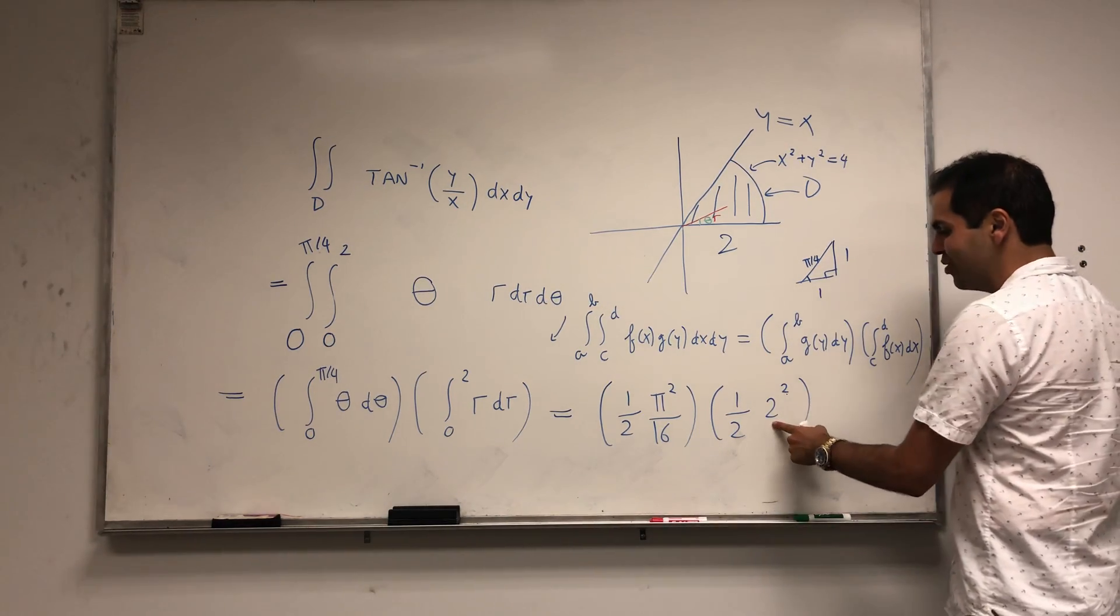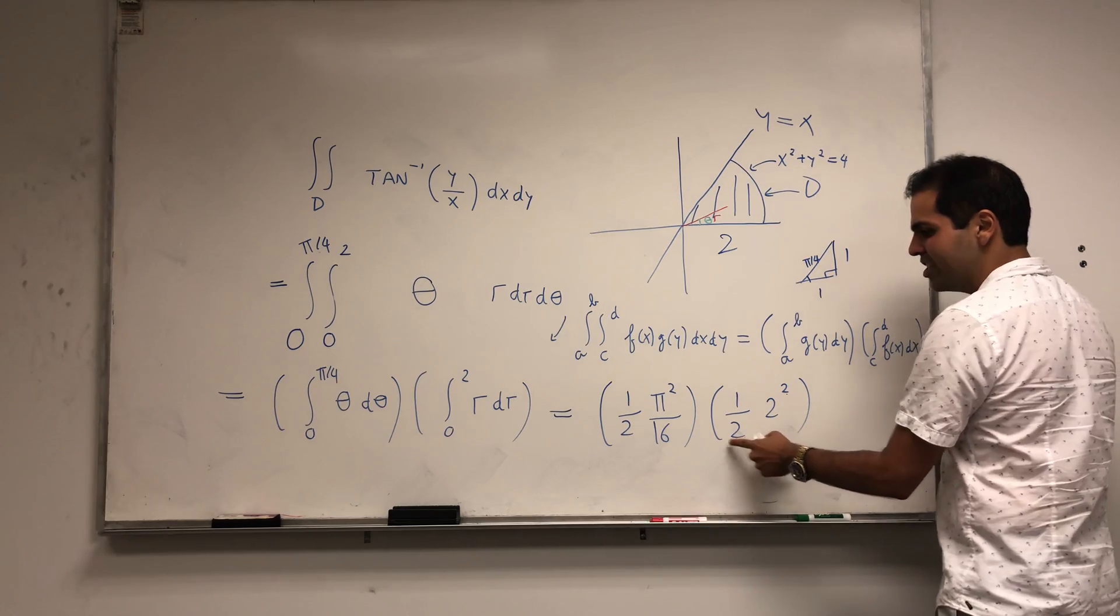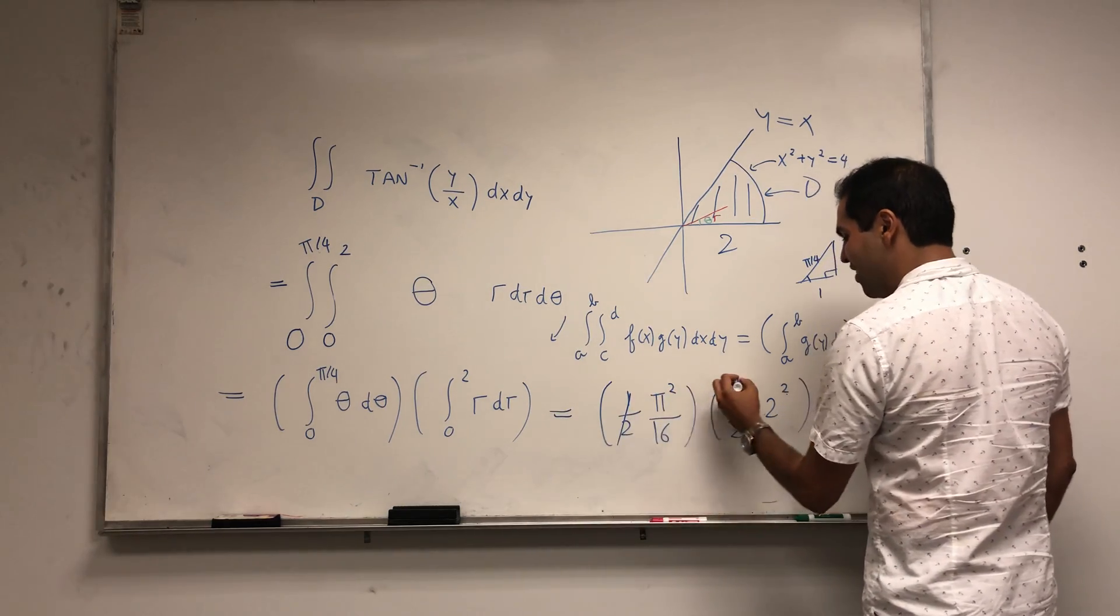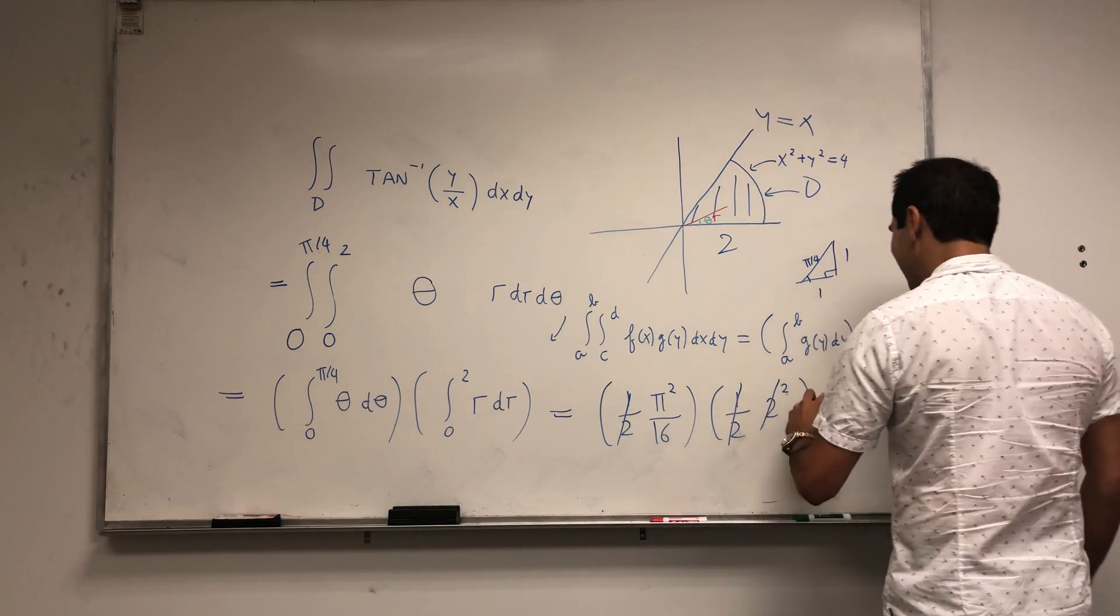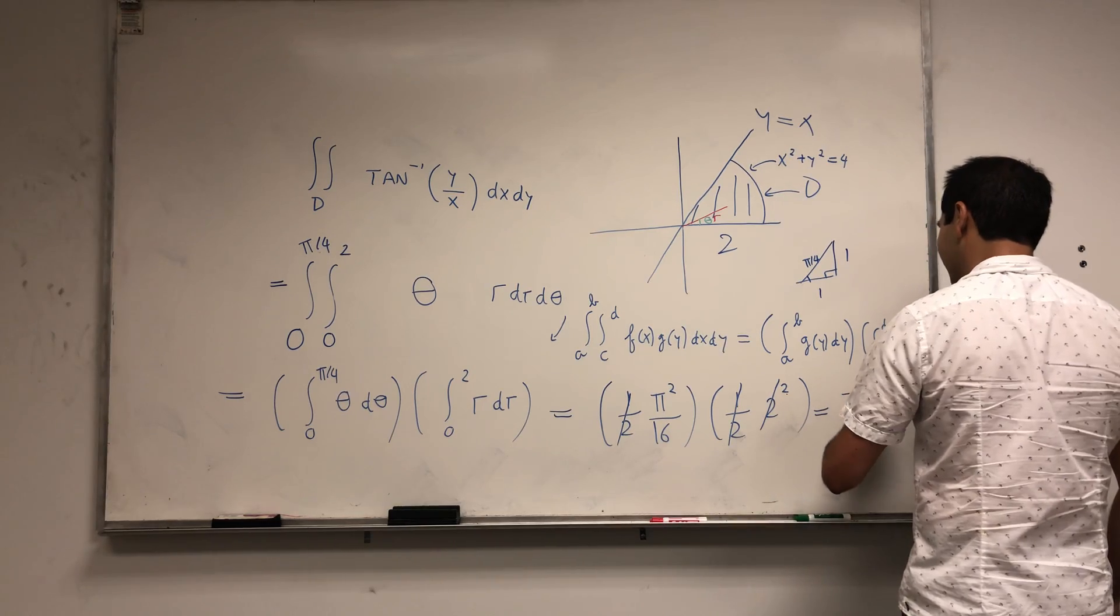And how cool is that? So 2 squared is 4, which cancels out with the one half and one half, and in the end you get pi squared over 16.